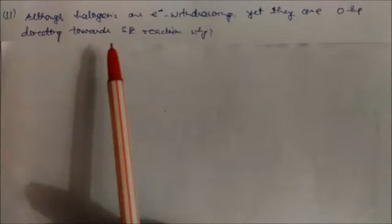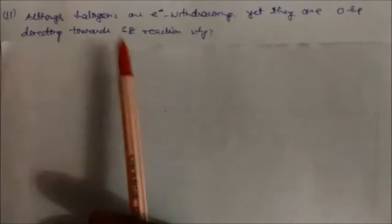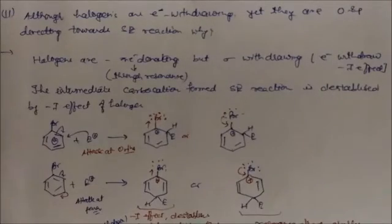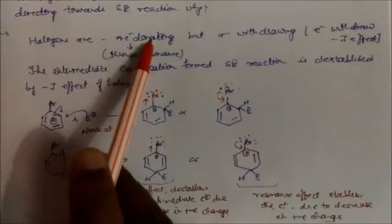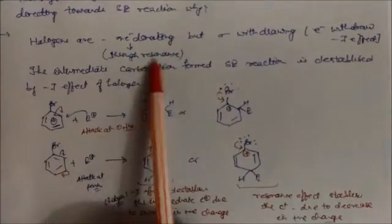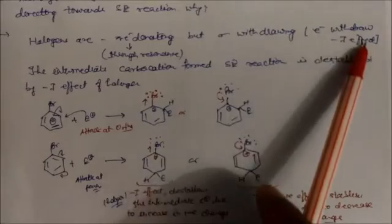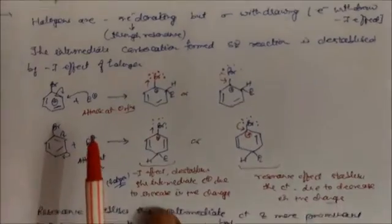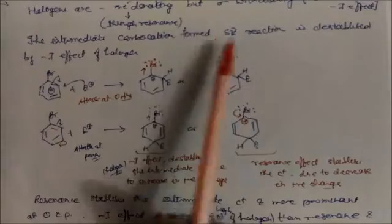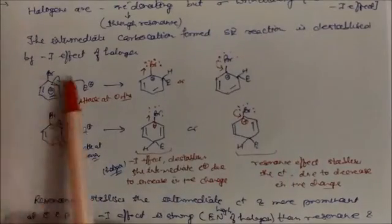Although halogens are electron-withdrawing, they are ortho and para directors in electrophilic substitution reactions. This is because halogens are pi-electron donating through resonance — they have lone pairs of electrons — but are sigma-withdrawing due to the minus-I (inductive) effect, since the electronegativity of halogen is greater than carbon. An intermediate carbocation is formed during electrophilic substitution and is stabilized by resonance from the halogen's lone pairs.